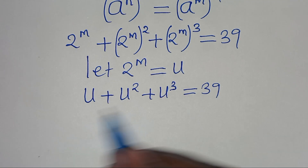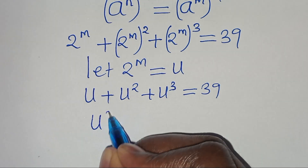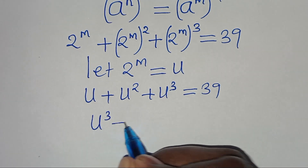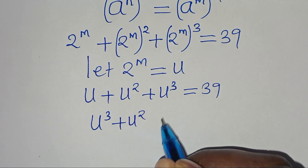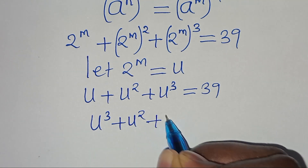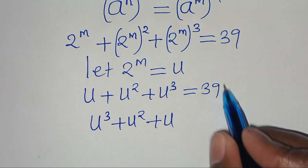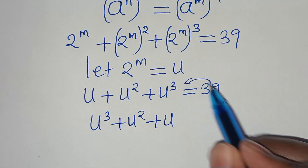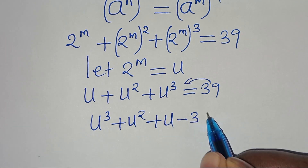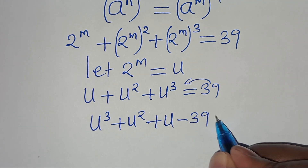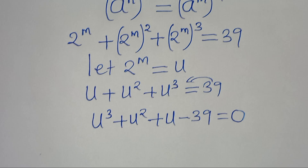We can rewrite this as u to the power of 3, plus u to the power of 2, plus u, equals 39. Moving 39 to the left-hand side, we get u³ + u² + u minus 39 equals 0.